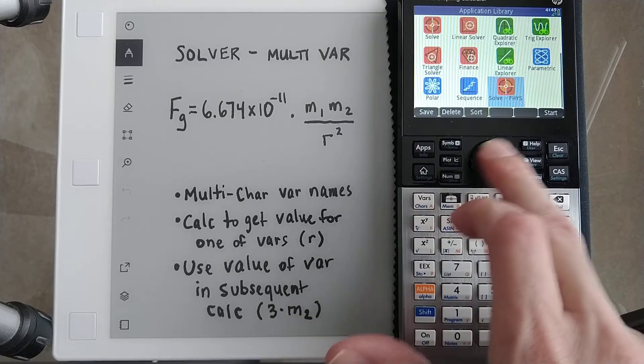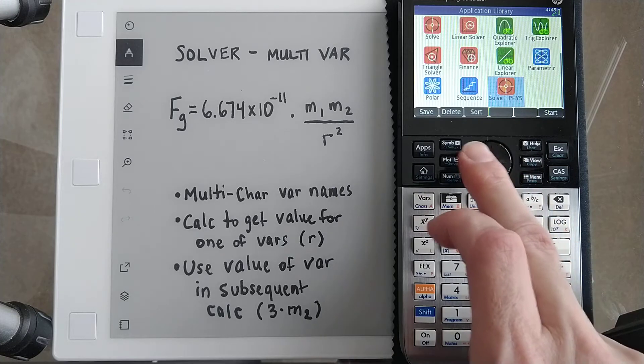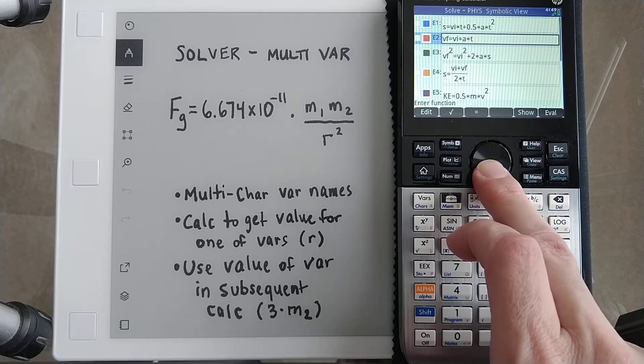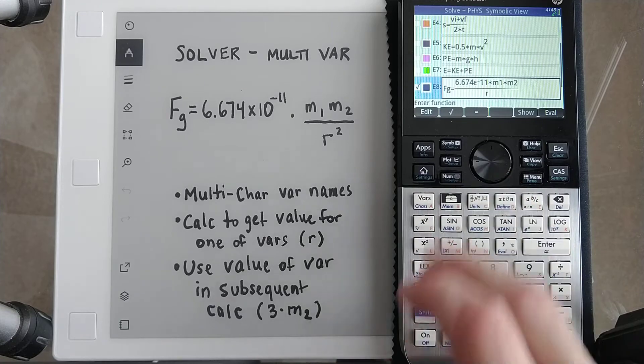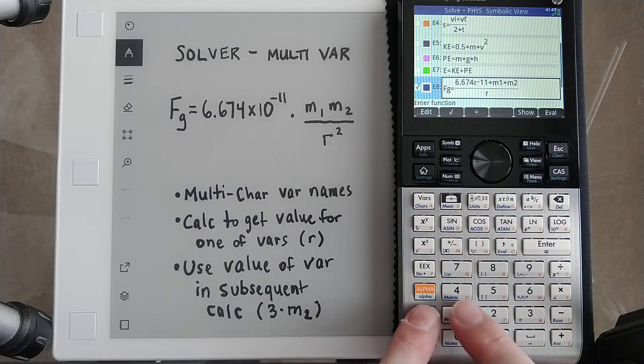So if I go into my app, this is a custom app where I just copied the solve and made my own physics equations. If I go in there, any of these multi-character variable names have been defined in program.